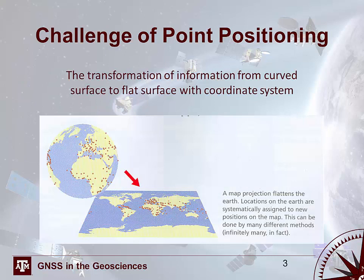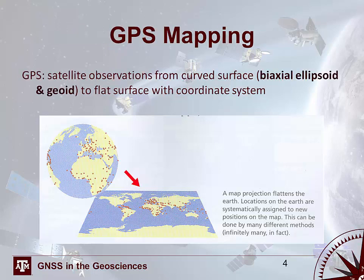One of the significant challenges of geodesy is how do we accurately determine the location of a point on Earth, and more importantly, how do we accurately transform this information from a curved surface to a flat system with a coordinate system. In GPS, point positioning is accomplished by taking satellite observations from a curved smooth mathematical surface and transforming those to a flat surface with a coordinate system. There are multiple ways that the Earth can be modeled.